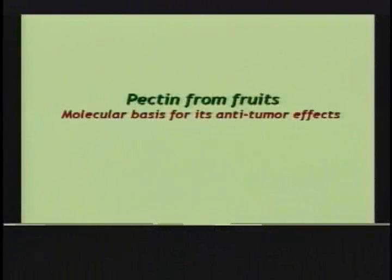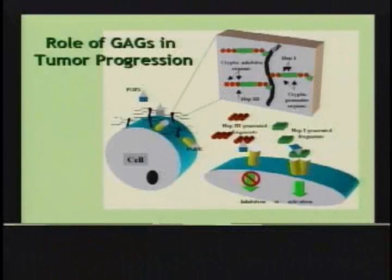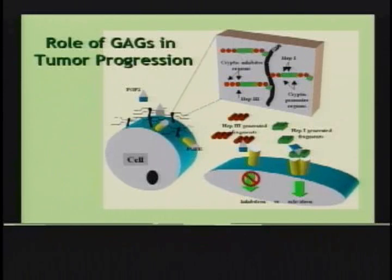What I'm going to quickly do is give you a sense of the anti-tumor effects of carbohydrates, focusing on pectin, but I want to draw a parallel between glycosaminoglycans and pectin, because much of our work began focusing on the important roles of GAGs in cancer biology. And this slide essentially summarizes that — what eventually got us to think about the role of GAGs in this process, and how similar kinds of molecules play a role in regulating various biological processes.